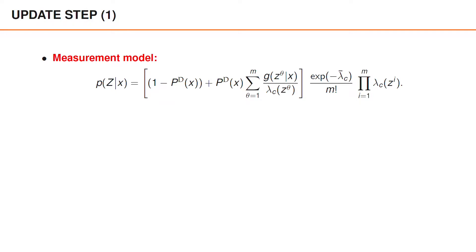In an earlier video, we described the measurement model on the following form. Inside the brackets, we have one term, 1 minus P^D(x), corresponding to the hypothesis that θ equals 0, and then M more terms for θ equals 1 to M. Outside the brackets, we then have some factors that are shared by all terms and that do not depend on X.